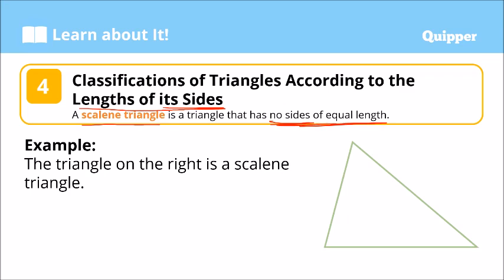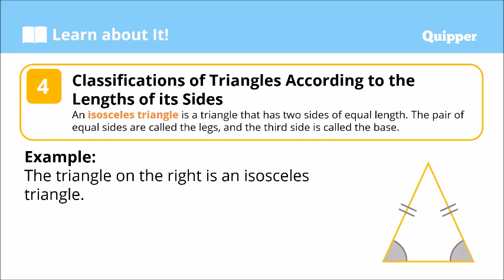Another classification of triangle based on the length of its sides is what we call the isosceles triangle. It has two sides of equal length — dalawang sides ay equal. The pair of the equal sides are called the legs.